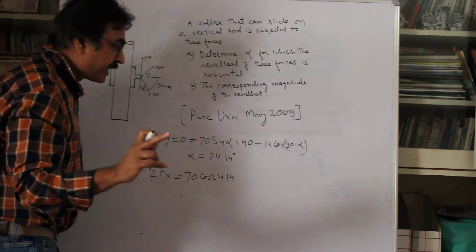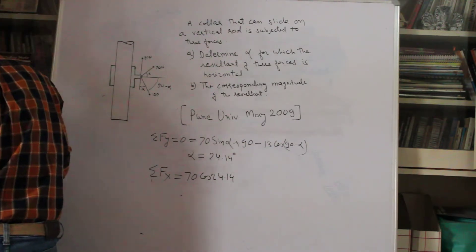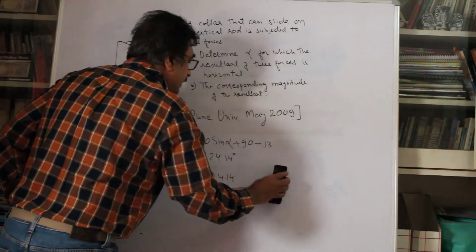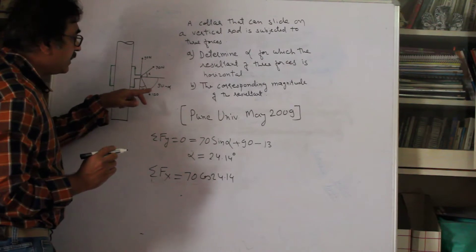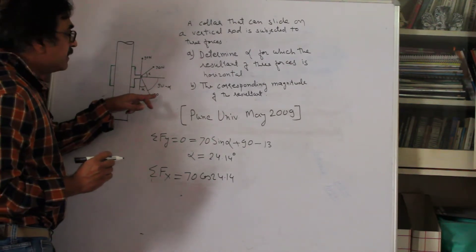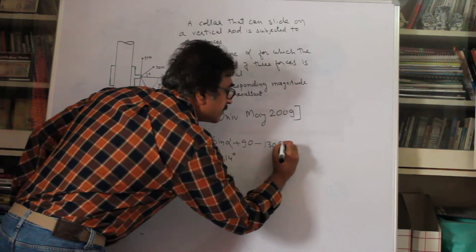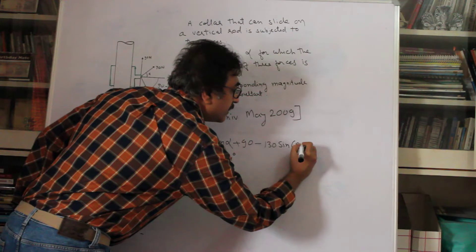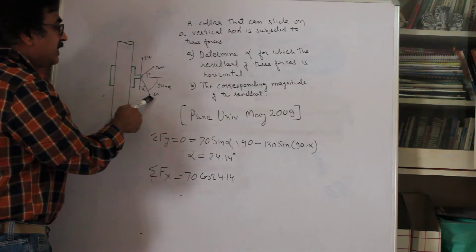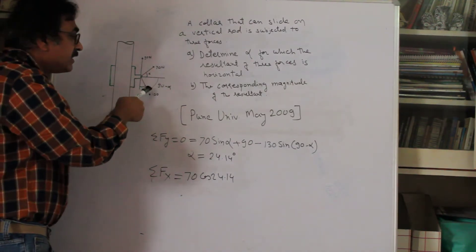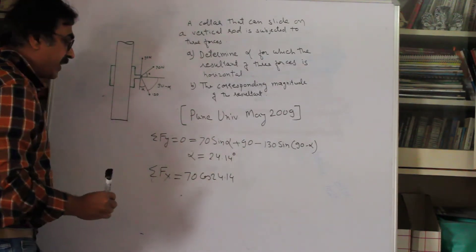Let me correct a mistake from earlier: when resolving the 130N force vertically, it should be 130 sine of (90 minus alpha), not cosine — sorry for that. Resolving the 130N force vertically uses sine of the angle the force makes with the horizontal, giving the vertical component downward. So it is minus 130 sine(90 − alpha). The earlier equation and alpha answer remain the same.